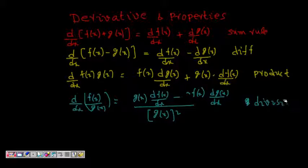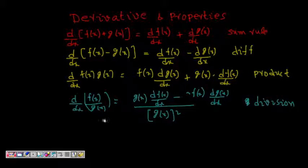So these are the four rules which can make your life very simple. We will now look at one example for each of them — very simple examples.